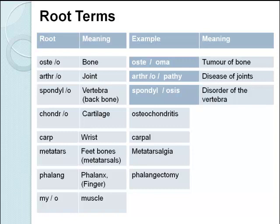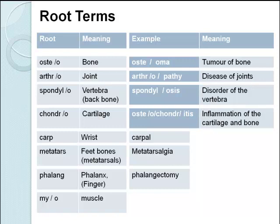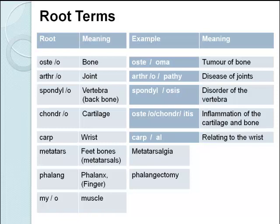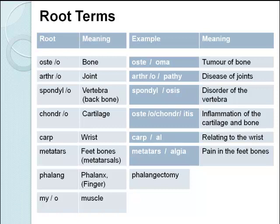Osteochondritis has two root words: osteo is bone, chondra is cartilage, and itis is inflammation — so it's inflammation of the cartilage and bone. Carp is wrist, so carpal, with the suffix 'al' meaning relating to, gives us relating to the wrist. Metatars relates to the metatarsals, so metatarsalgia: algia means pain, so metatarsalgia is pain in the feet bones. Phalanx relates to phalanges — finger or toes — so a phalangectomy: ectomy means removal, so a phalangectomy is removal of a finger or toe.